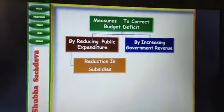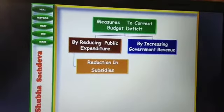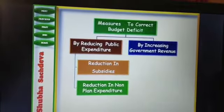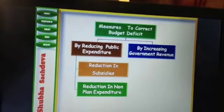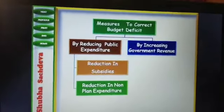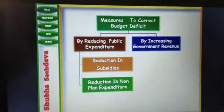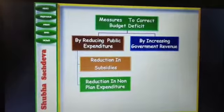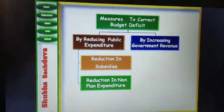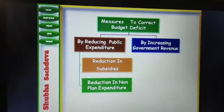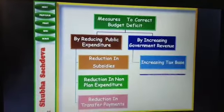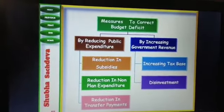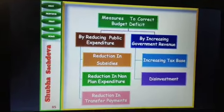What does public expenditure have to reduce? Subsidies — this is wasteful expenditure, especially when giving subsidies to rich people, like rich farmers. Reduce that expenditure. Non-plan expenditure, which includes defense and administration — reduce it. Also reduce transfer payments. When we control these things, the expenditure will be reduced.